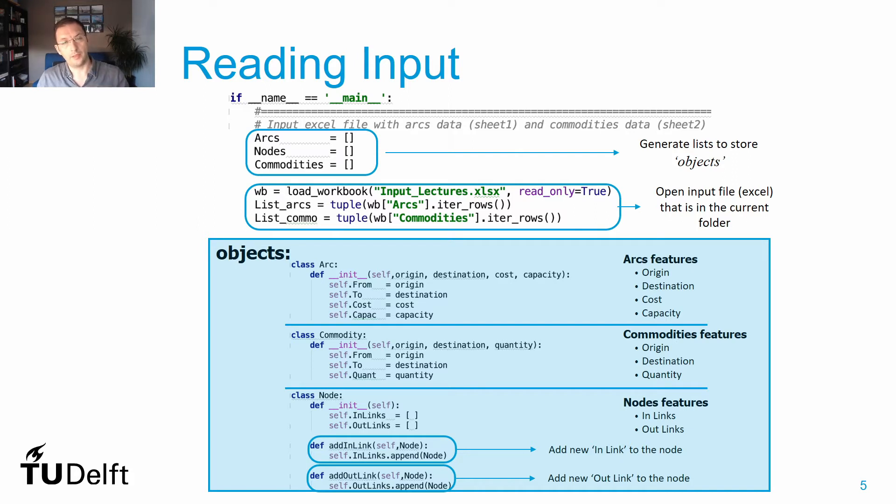The way I populate these objects is by reading the input file. I read the input file, more precisely I read the workbooks called arcs and commodities that have all the information about my arcs and commodities, and then I can automatically generate all elements of the objects arcs, commodities, and nodes.